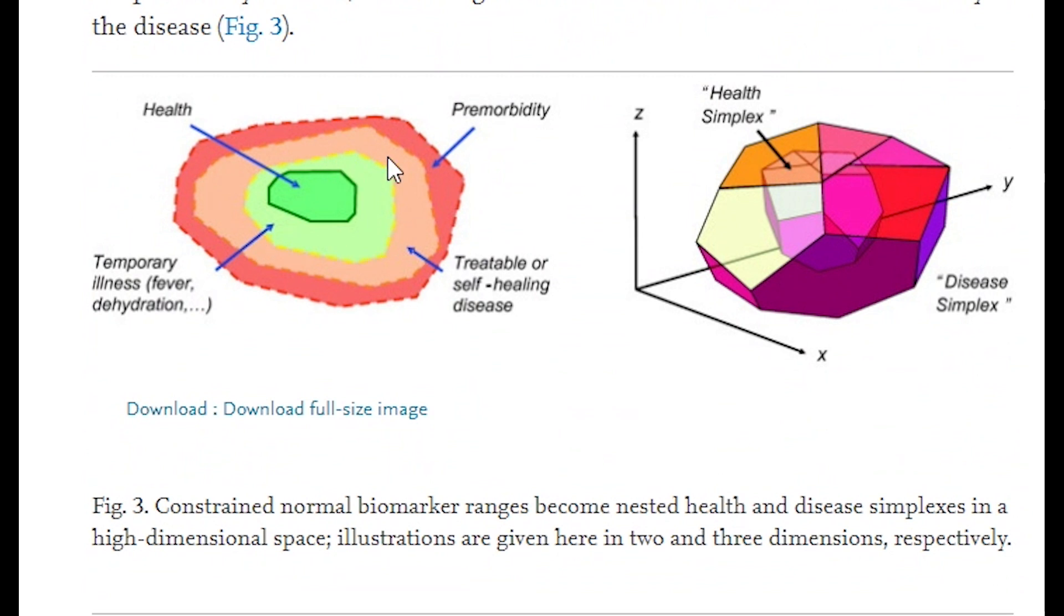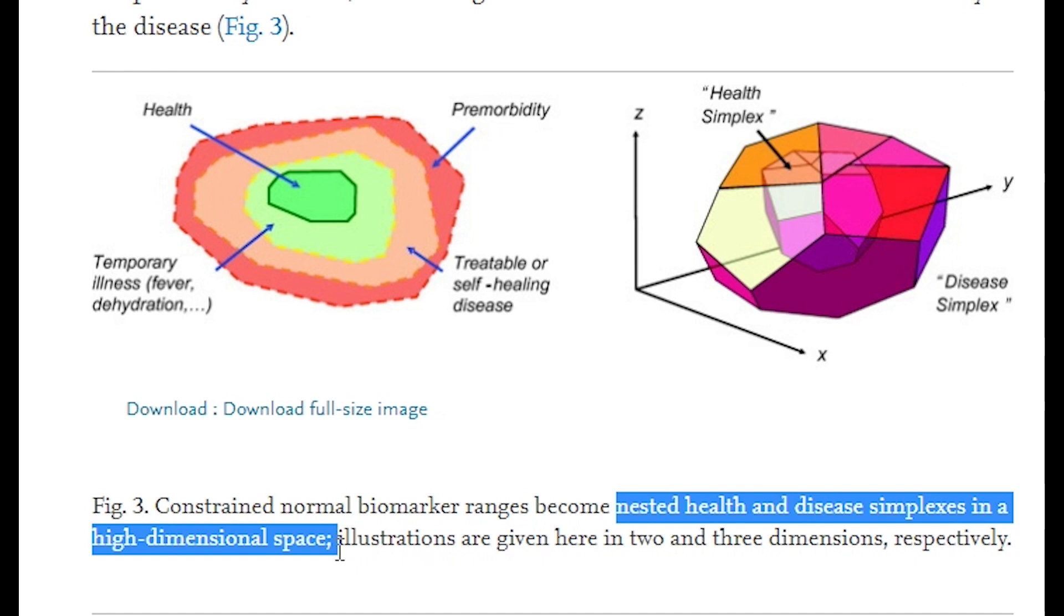And so the health simplex is surrounded by a larger simplex of transient unhealthiness, which could include conditions like a fever, dehydration. This simplex is then in turn surrounded by a disease simplex, and then a morbidity simplex.